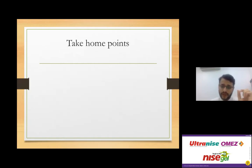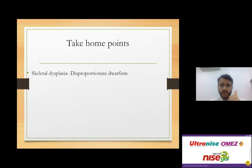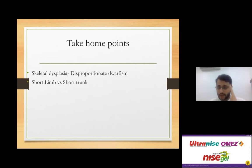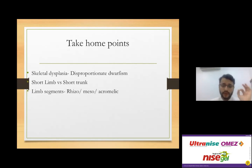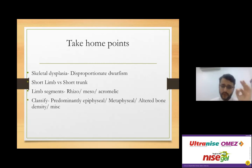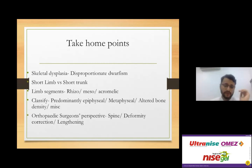Take-home points: Skeletal dysplasia is disproportionate dwarfism — distinguish it from idiopathic proportionate short stature. Distinguish short limb from short trunk dwarfism — Tyrion Lannister versus Professor Flitwick. Remember limb segments: rhizomelic, mesomelic, acromelic. Classify X-rays into epiphyseal, metaphyseal, altered bone density, and miscellaneous. Consider the orthopedic surgeon's perspective: spine screening, deformity correction, and lengthening.